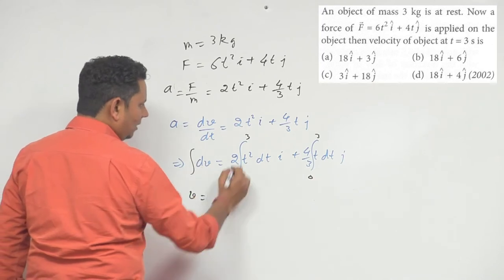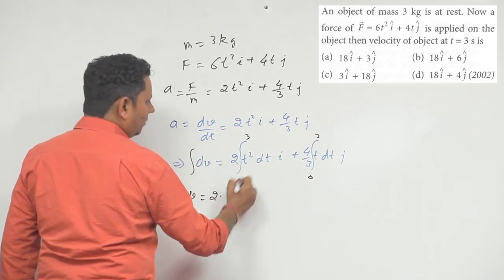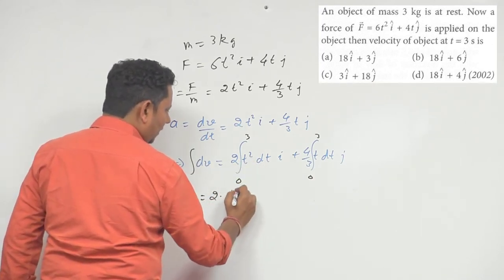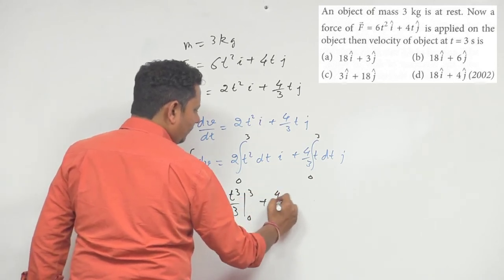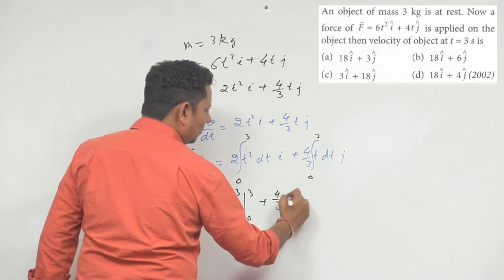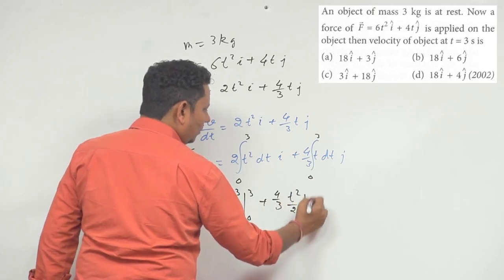We get v equal to 2 multiplied by t cube divided by 3, from 0 to 3, plus 4/3 times t square by 2, from 0 to 3.